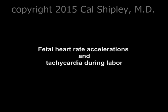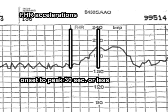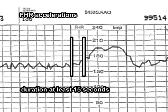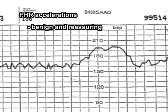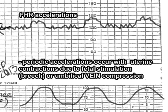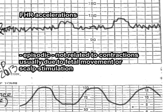Finally, let's take a look at accelerations of the fetal heart rate and tachycardia during labor. An acceleration is defined as an increase in the fetal heart rate where the increase from onset to the peak of the acceleration is less than 30 seconds, greater than 15 beats per minute above the baseline, and with a duration of at least 15 seconds from onset to return. Fetal heart rate accelerations are almost always benign and reassuring. They may occur periodically in relation to uterine contractions, usually due to fetal stimulation — especially with breech presentation — or when the umbilical cord is compressed with compression of the umbilical vein only. Episodic fetal heart rate accelerations occur independently of uterine contractions and are usually due to fetal movement.